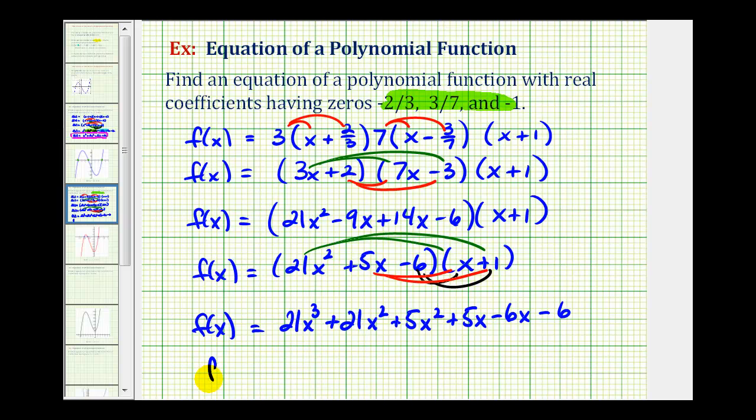Last step, we'll combine our like terms. We have two x² terms and we have two x terms. So f(x) = 21x³. This would be plus 26x². 5x minus 6x is -1x or minus x minus 6.